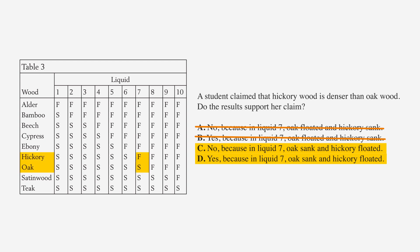Now, do the results support the claim that hickory is more dense than oak? Hickory floats and oak sinks. So the results do not support the student's claim. The correct answer is C. Notice we didn't need to know any of this information before reading this question. Everything we needed was right there.